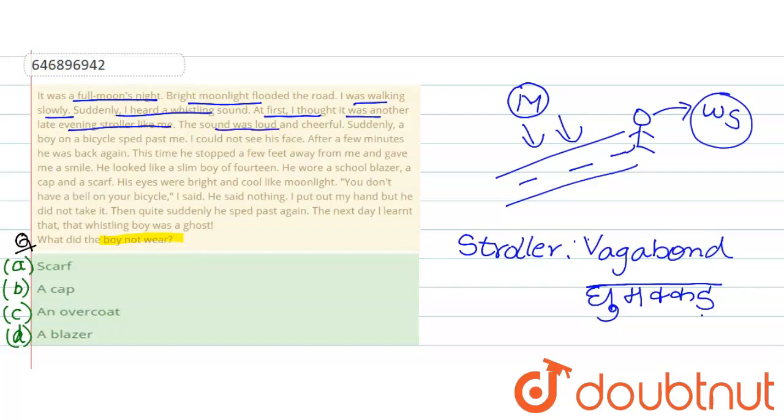The sound was loud and cheerful. Sound kaisi thi? Loud thi aur cheerful thi. Suddenly, ekdam se kya hota hai? A boy on a cycle sped past me. Ek jo ladka hai, woh kis mein aata hai? Bicycle mein. Sped past me. Past me yaani ki woh mere aage jaata hai. Woh kahaan woh mere aage gaya. Tezhi se mere aage nikla.